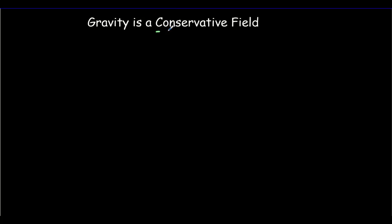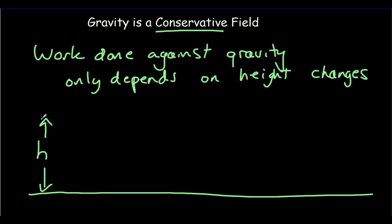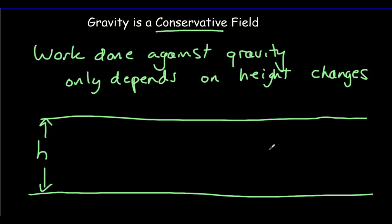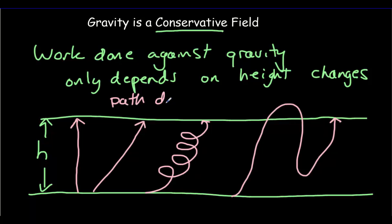You might hear it said that gravity is a conservative field. All that means is that the work done against gravity only depends on the height changes — only on the change in gravitational potential energy. So if I specify some height change, the work done against gravity does not depend on path: I can go straight up, at an angle, do a loop-de-loop, or go up and back. The path does not matter; all of these instances would have the same work done against gravity.